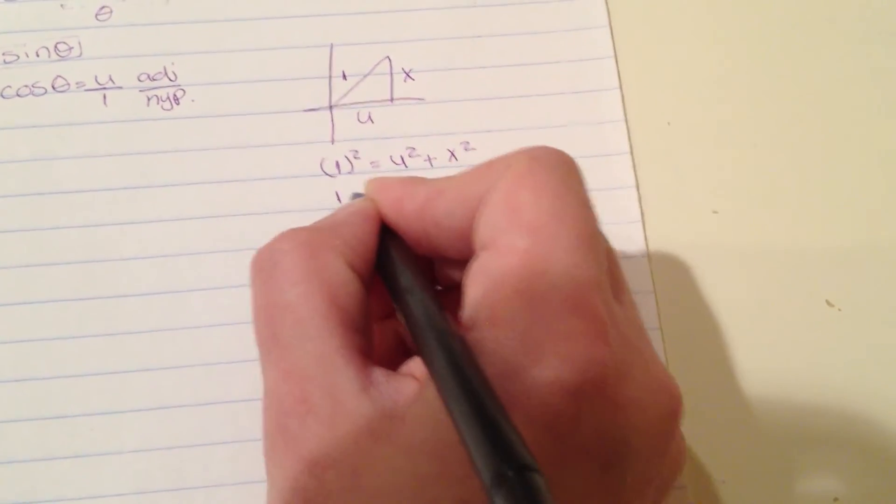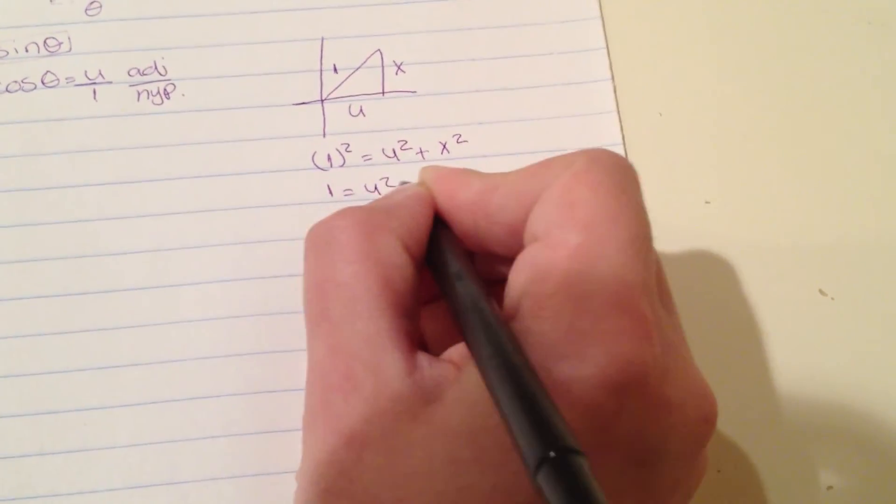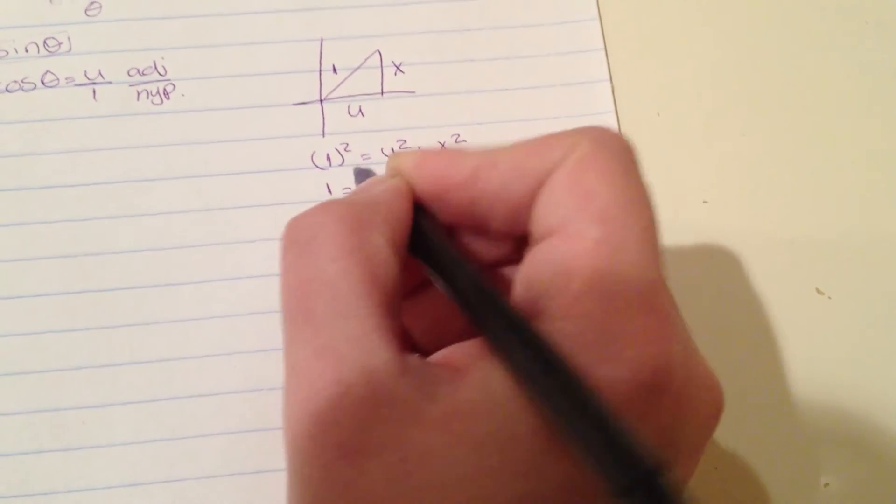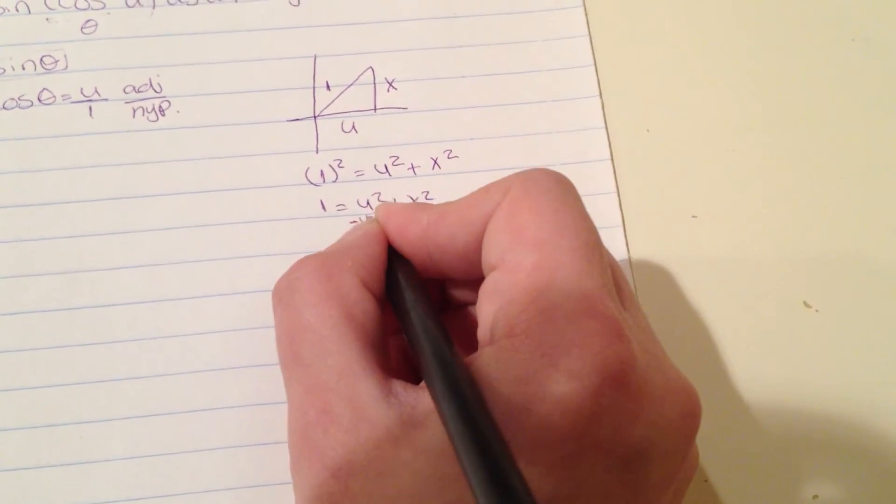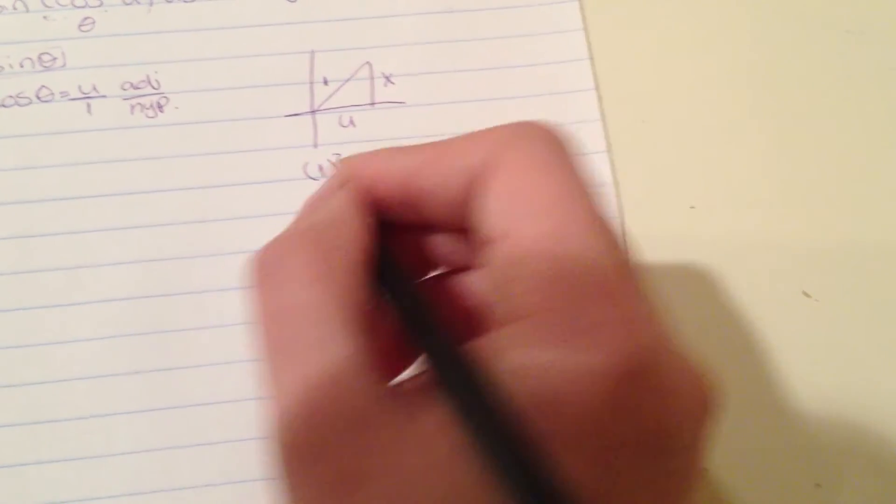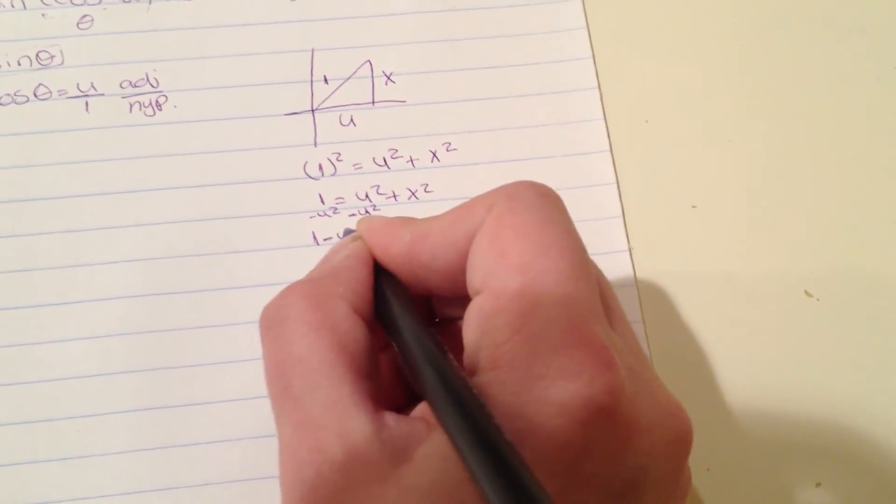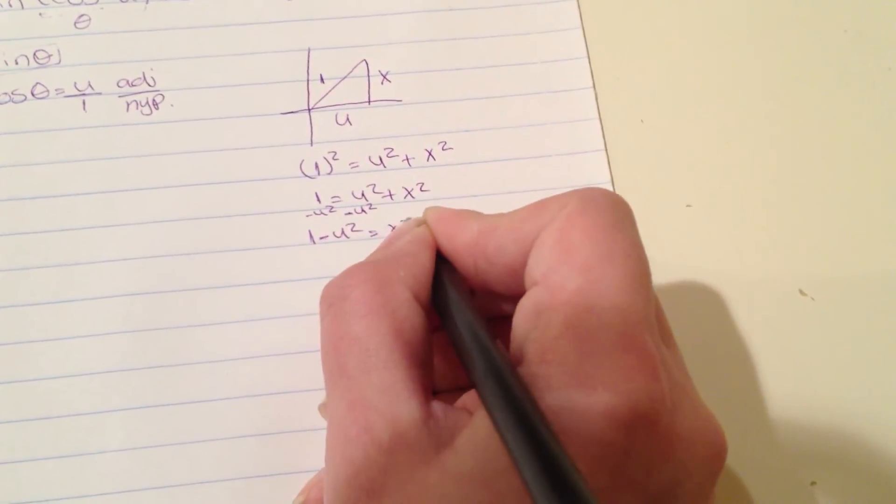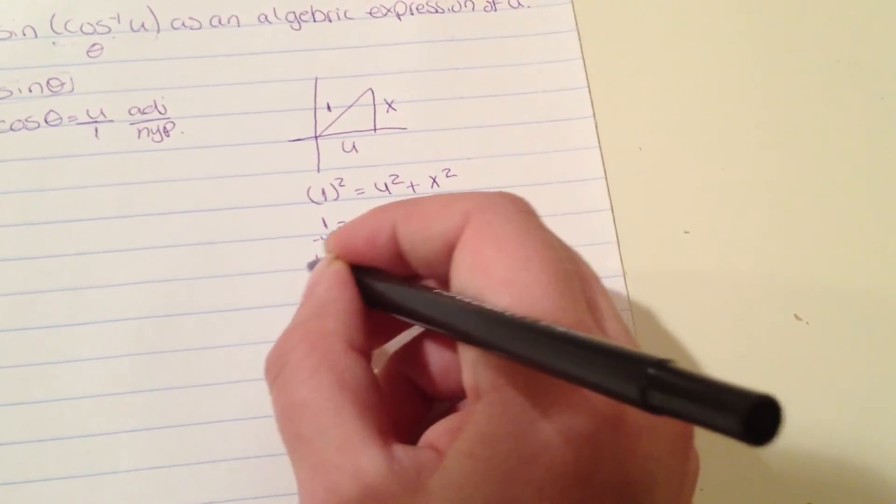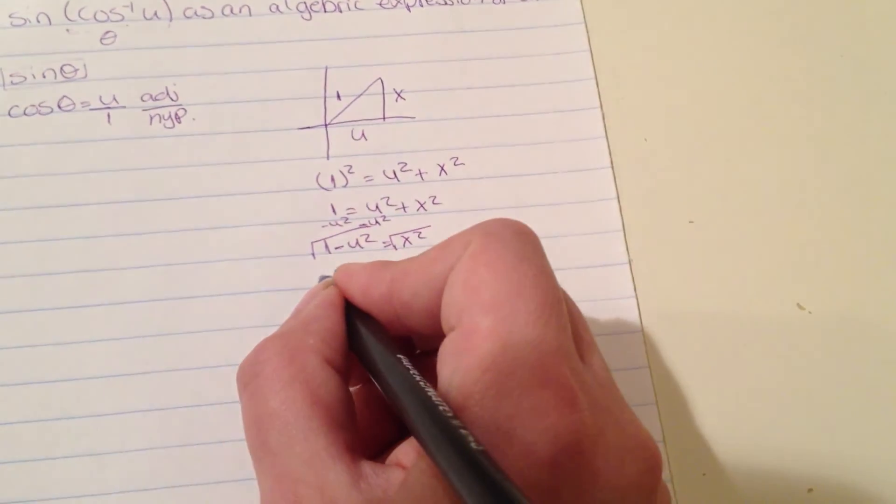We're going to move the X to the other side, so it's going to be 1 minus u squared equals x squared. Then square root both sides, so X equals square root of 1 minus u squared.